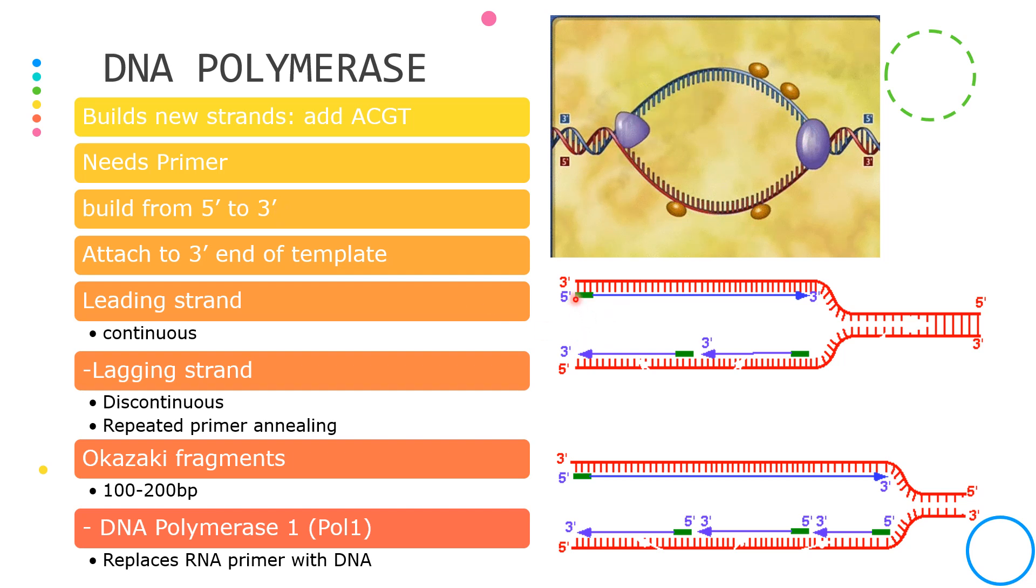Shown in the picture, the DNA polymerase will build nucleotides from the 5 prime going to the 3 prime direction. That means that it can only attach to the 3 prime end of the DNA template.